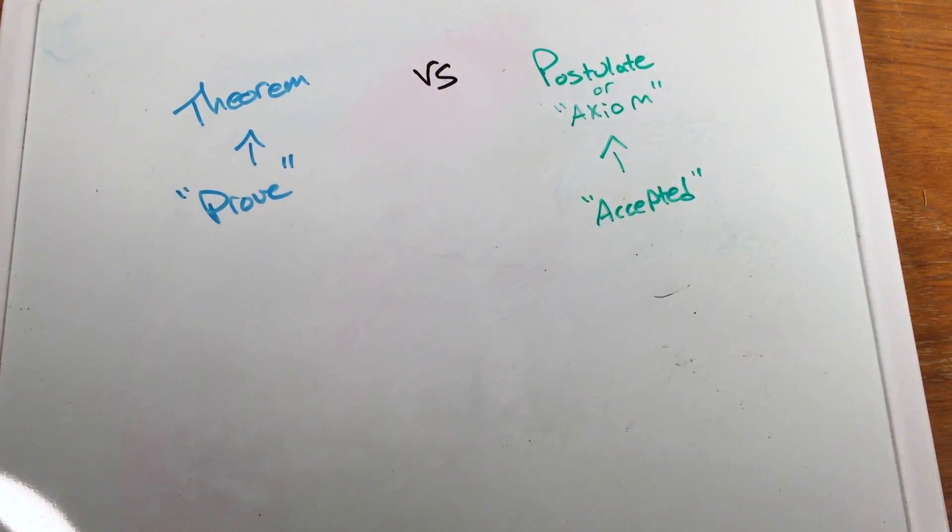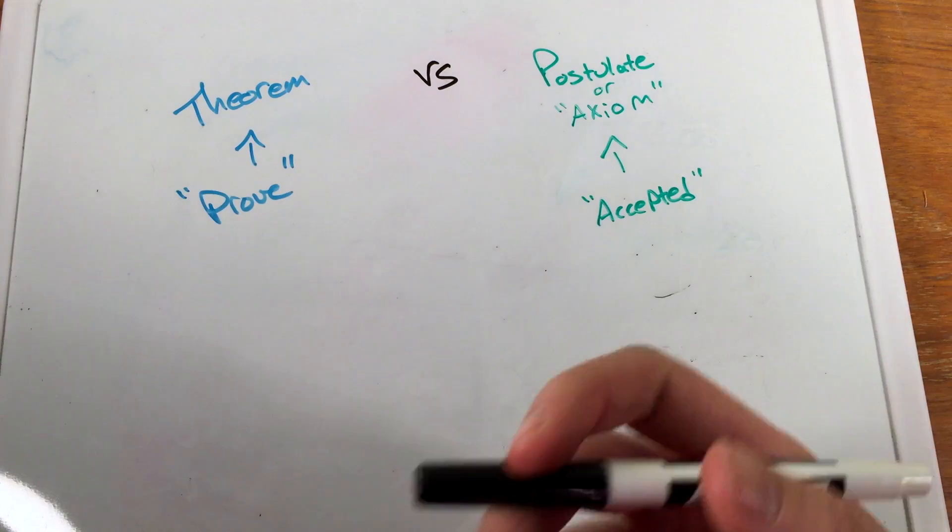Now again, both these terms are something that people use to maybe sound very smart by actually stating things like, oh, by this postulate or by this theorem, and it's used a lot when it's not really something that's not necessarily proven true or accepted to be true.